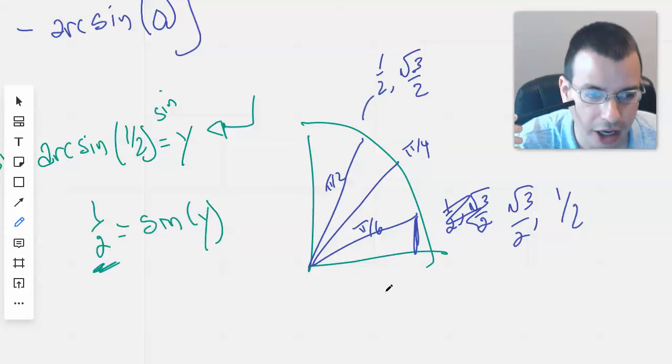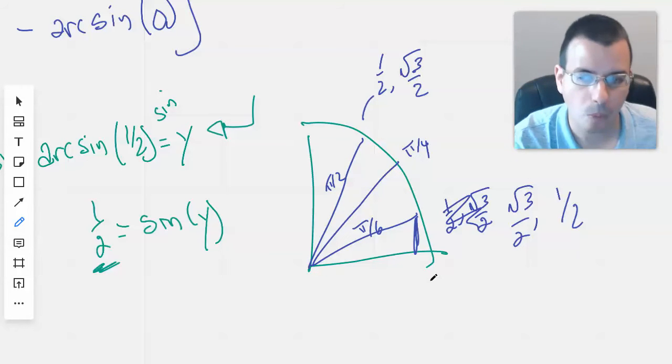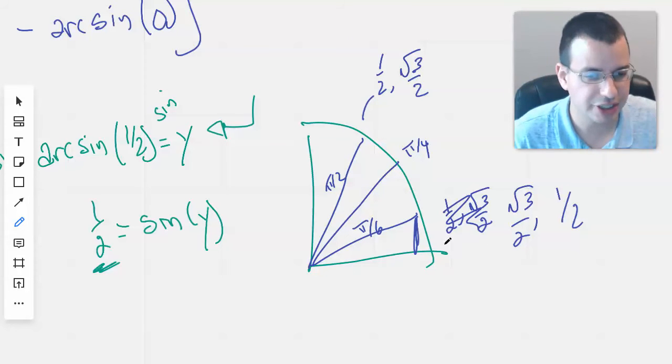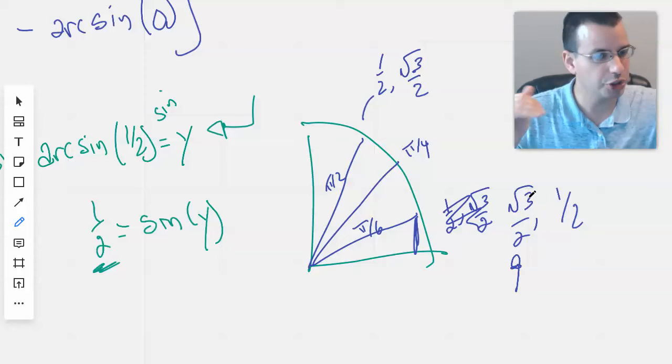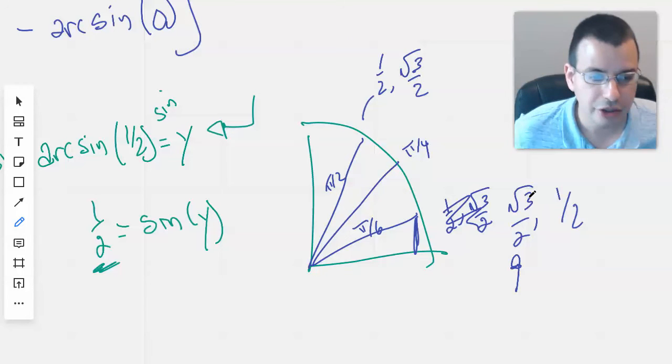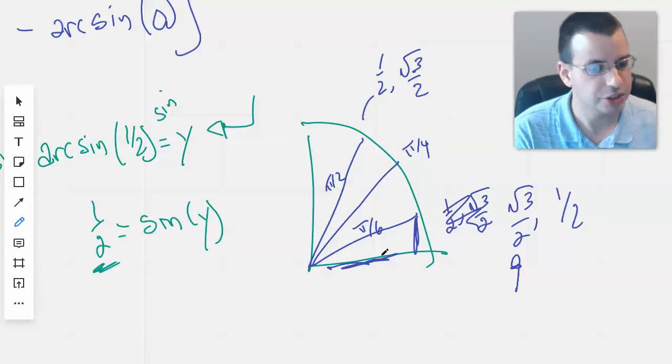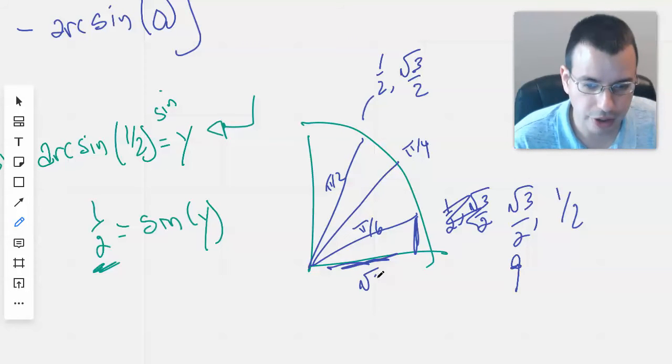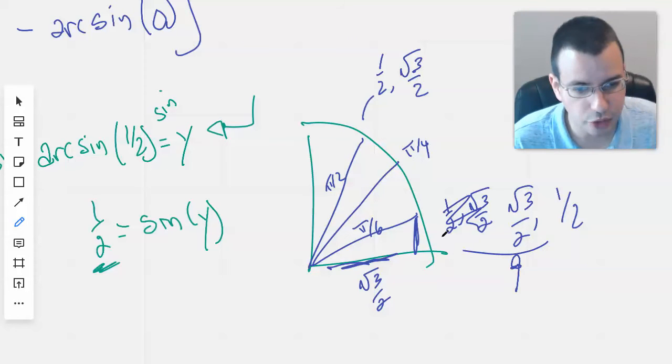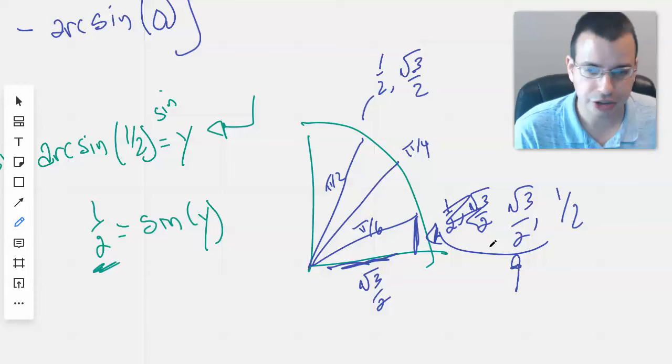So this is the x value. And so we know square root of 3 over 2 is bigger than one half because square root of 3 is somewhere between 1 and 2. So between 1 and 2 is bigger than 1, so the big value, which is the cosine, which is the x value, will be the big one. So square root of 3 over 2 is this, and then one half is that. So we know this is correct.